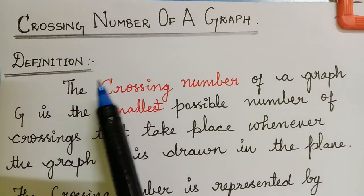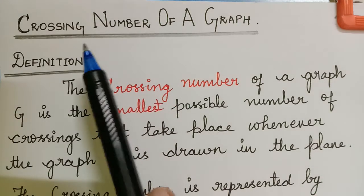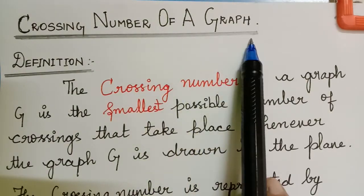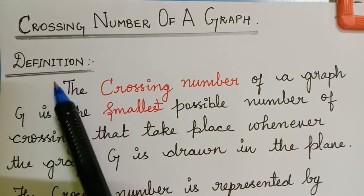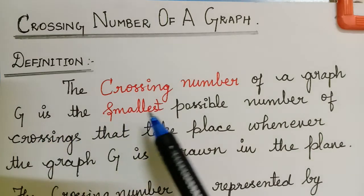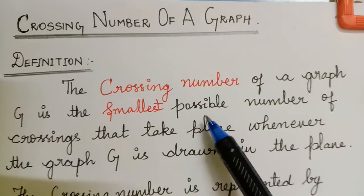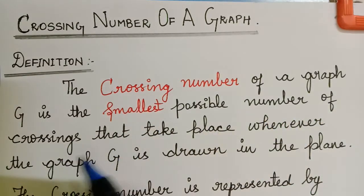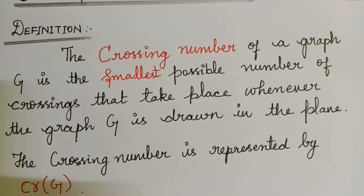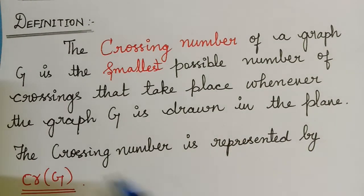Hello students. In this lecture let us learn about the crossing number of a graph. The crossing number of a graph G is the smallest possible number of crossings that take place whenever the graph G is drawn in the plane. The crossing number is represented by CR of G.